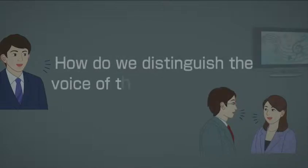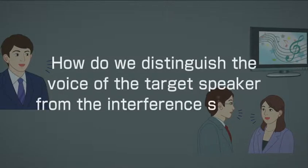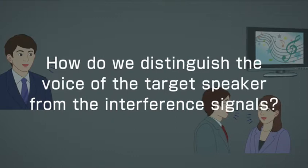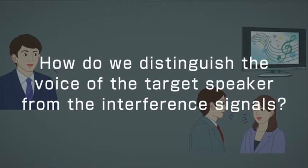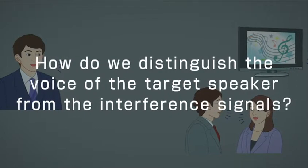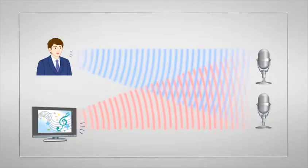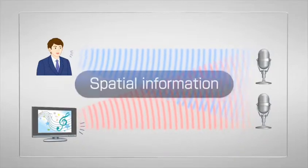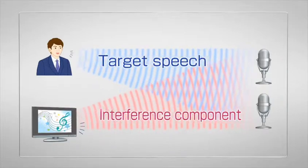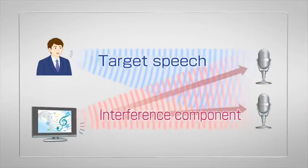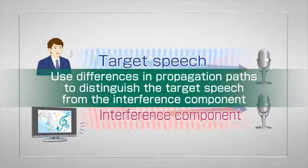How do we distinguish the voice of the target speaker from interference signals, and how do we suppress only those interferences? We can use unique characteristics of speech for this purpose. The first characteristic we can use is spatial information. Generally, sounds coming from different locations reach the microphone via different propagation paths, and these differences can be used to distinguish the target speech from the interference component.